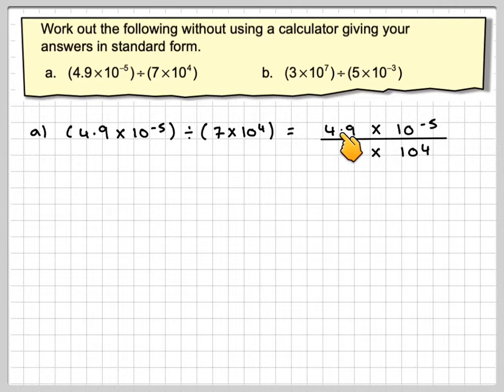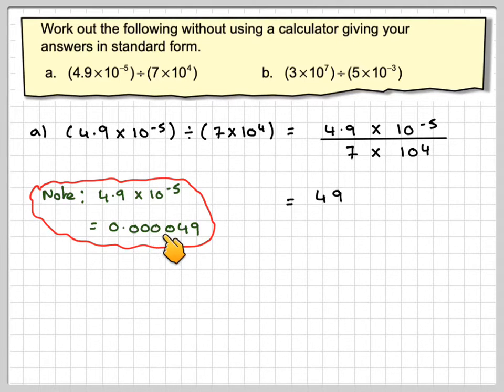The problem here is we've got to do 4.9 divided by 7. If we write 4.9 as 49, remembering that 4.9 times 10 to the minus 5 equals 0.000049, we move the decimal point 5 places to get to 4.9, then we'd only need to move it one more place to get 49. So we change this to 49 times 10 to the minus 6 divided by 7 times 10 to the 4.